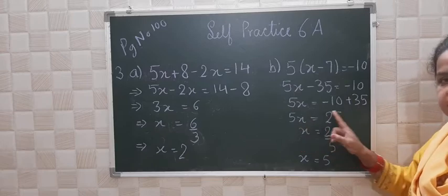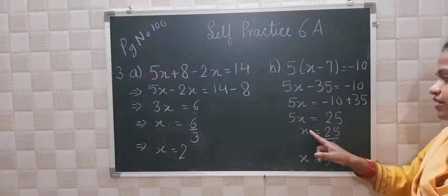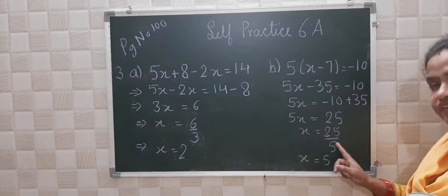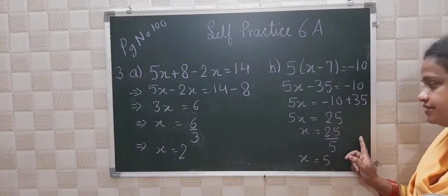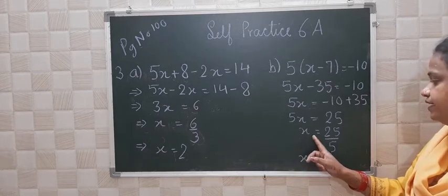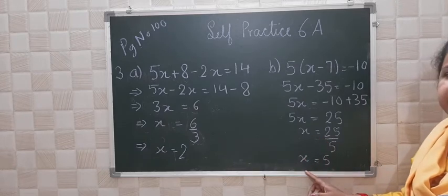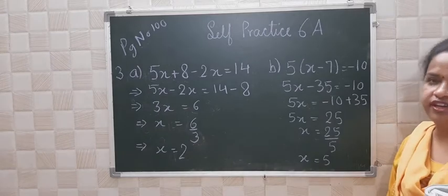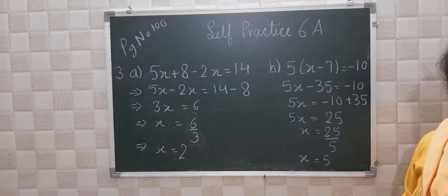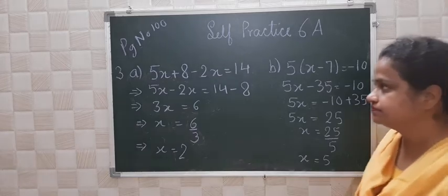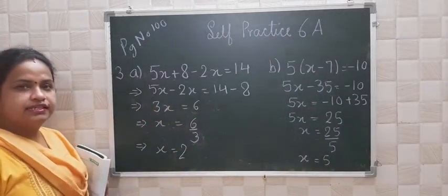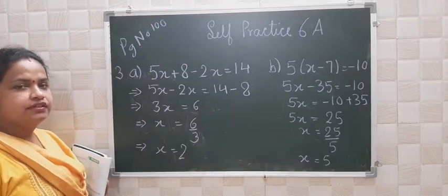So you will have 5x equal to 25. x will be 25 divided by 5, because when the 5 goes to the right hand side it comes in division. So you will have 25 by 5, and at last x is equal to 5. Is it clear to you all?